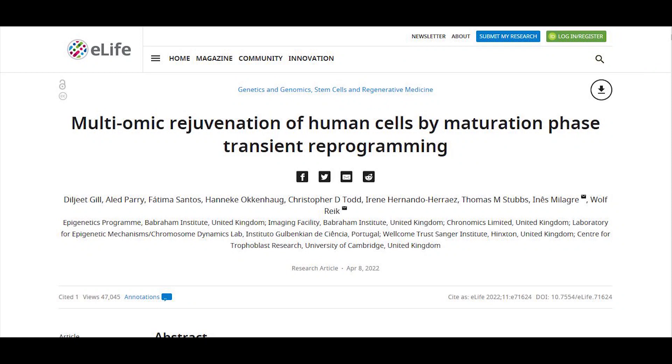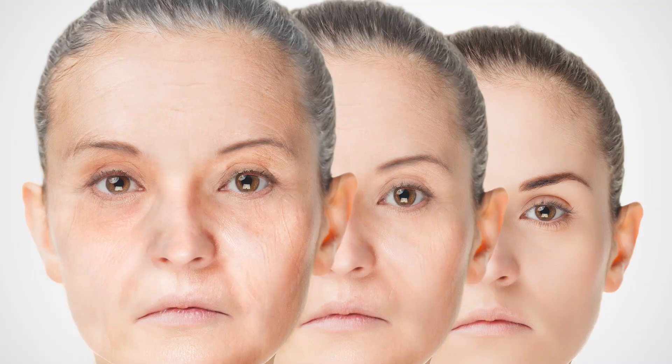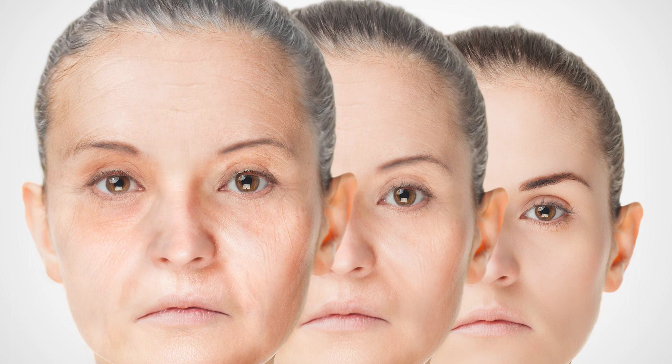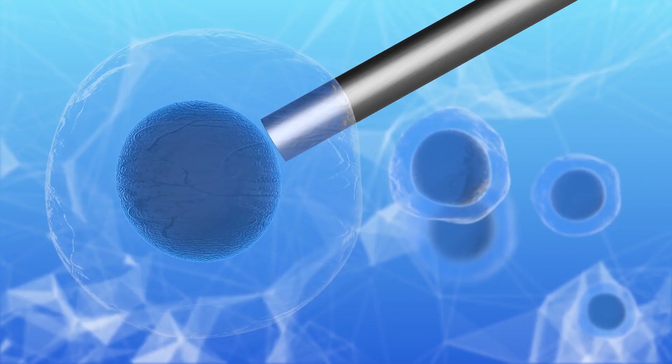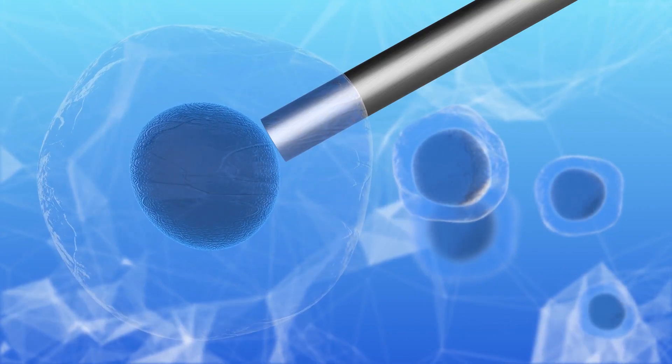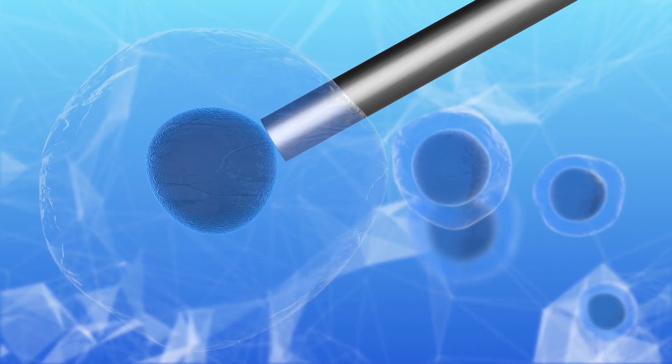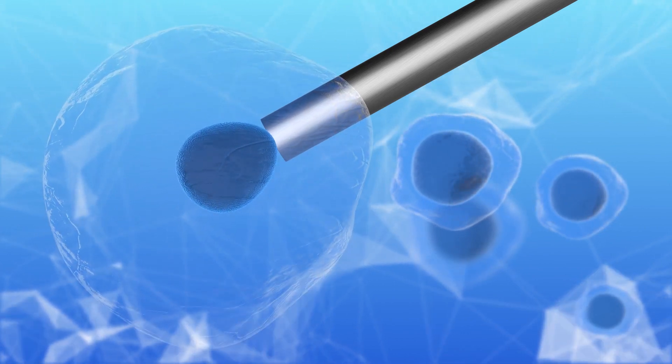Published in the journal eLife, researchers look into measures of cell aging like the epigenetic clock and the transcriptome. Via maturation-phase transient programming, they use Yamanaka factors on aging skin cells. The cells only needed 13 days to get back their youthful glow, faster than the 50 days on stem cell reprogramming.